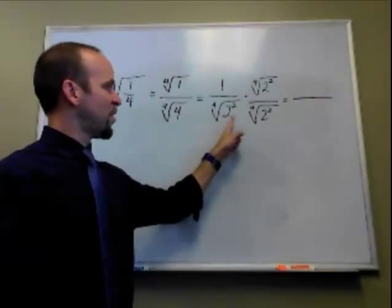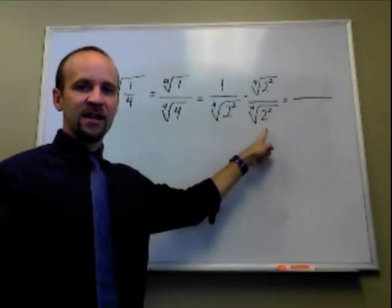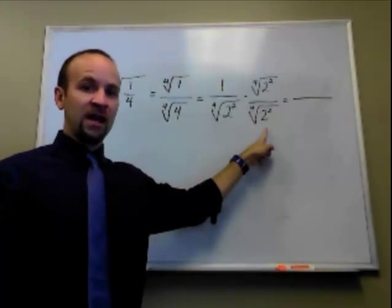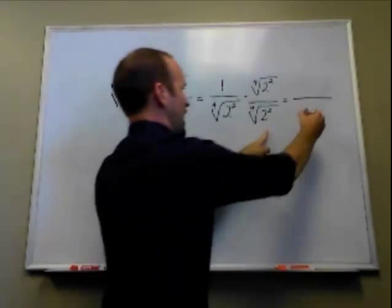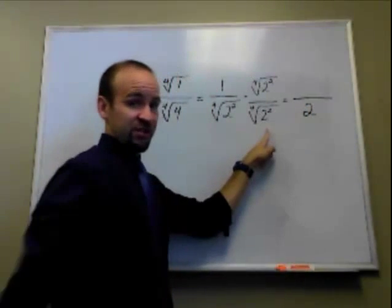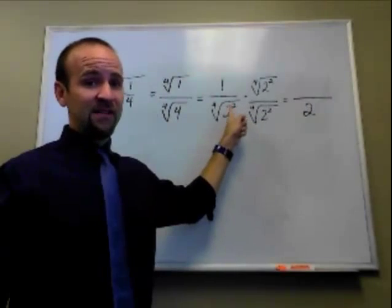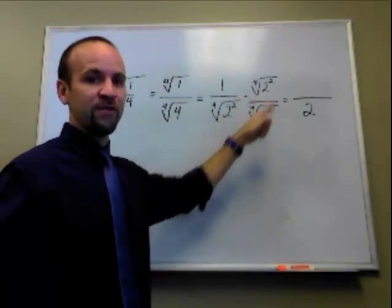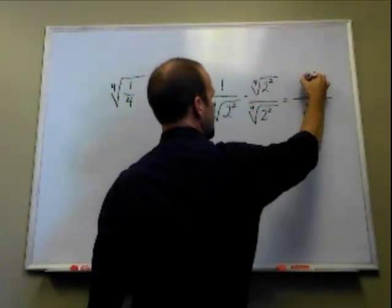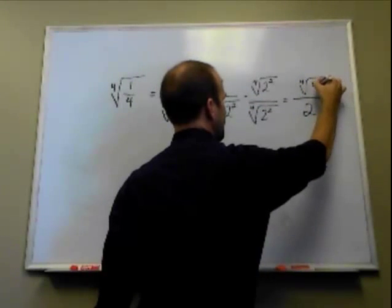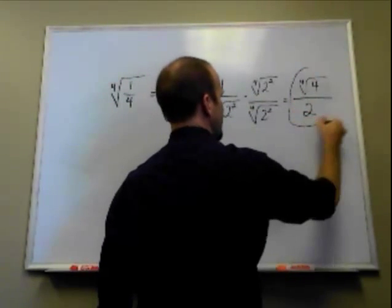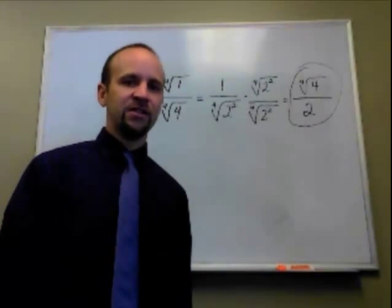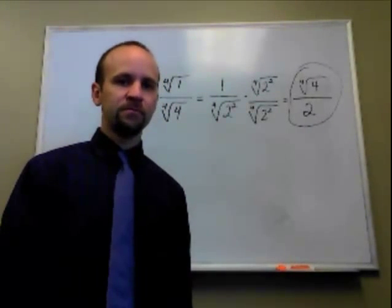When we multiply these together, two squared times two squared is two to the fourth power, and the fourth root of two to the fourth power is just two. In the numerator, all we have is one times the fourth root of two squared, which we can write as the fourth root of four. So the final answer is the fourth root of four divided by two.